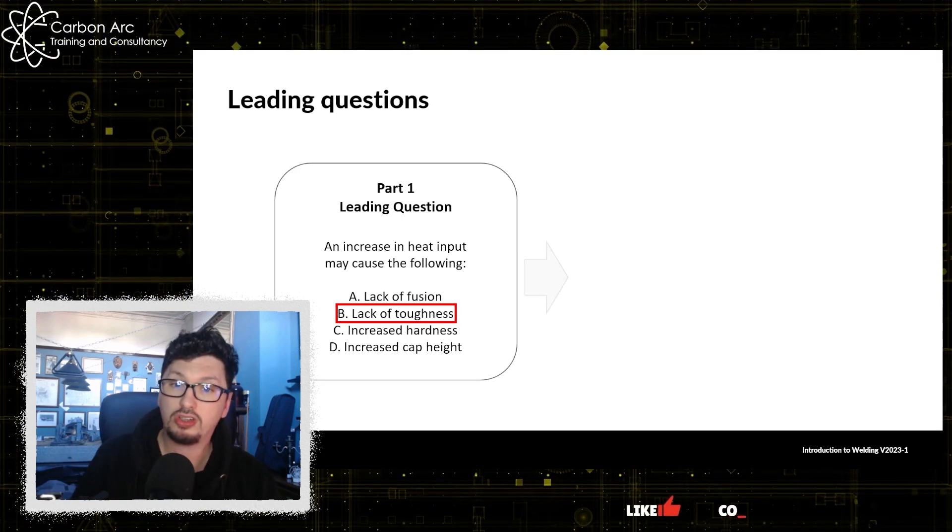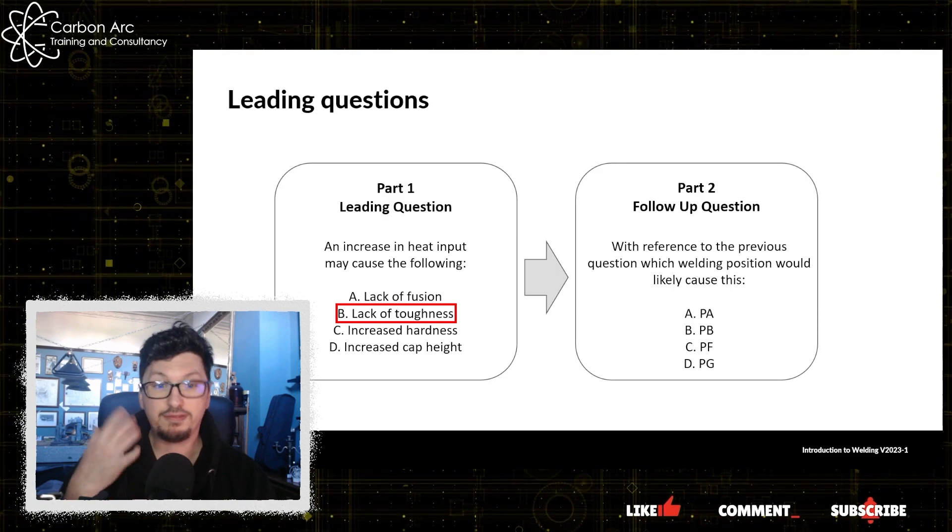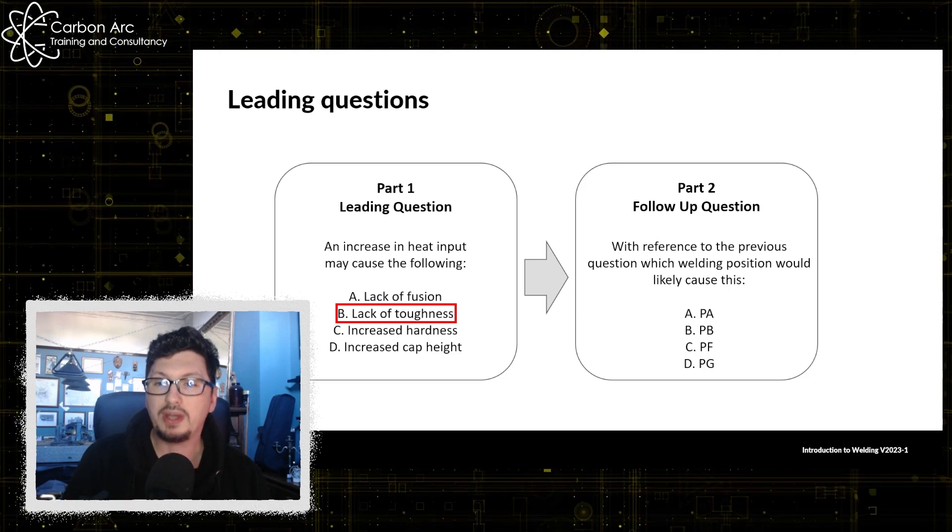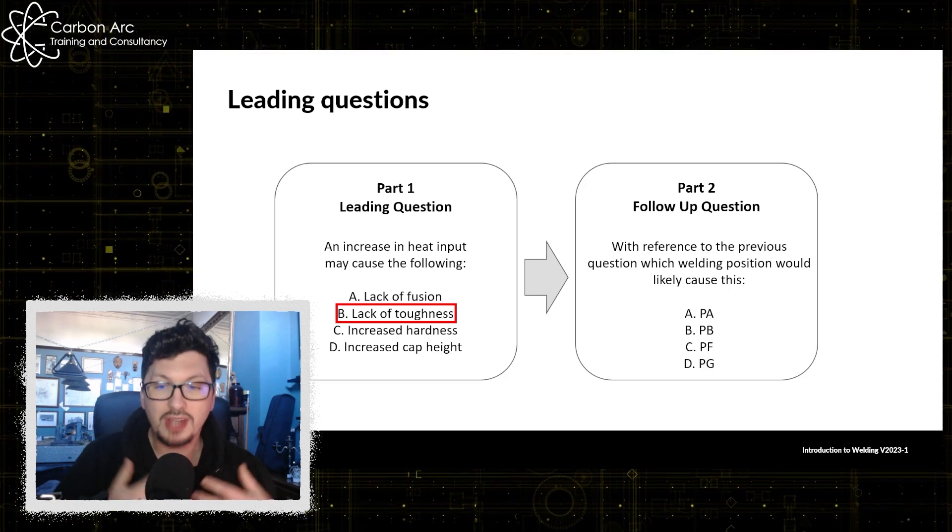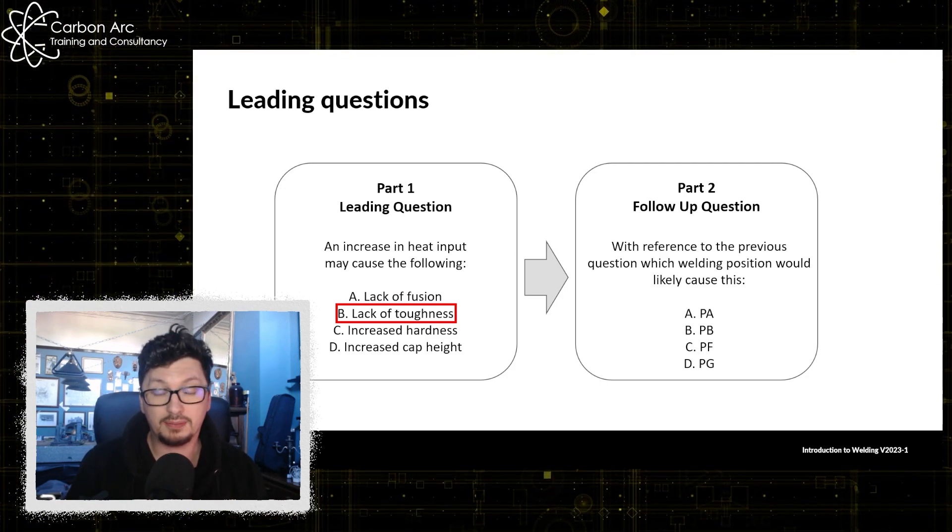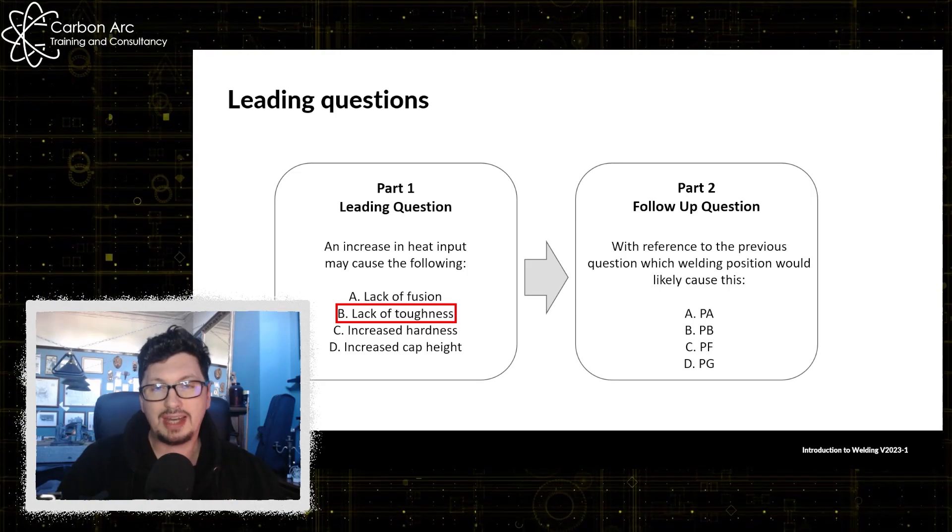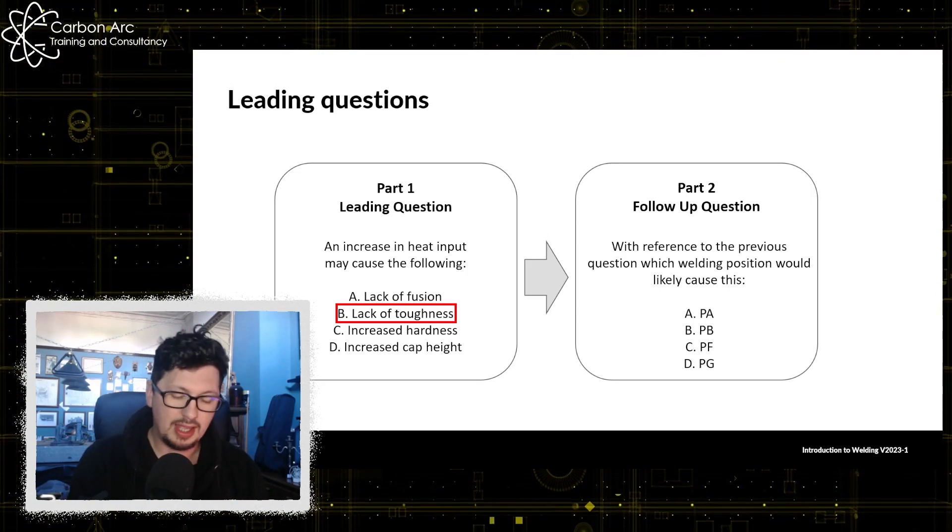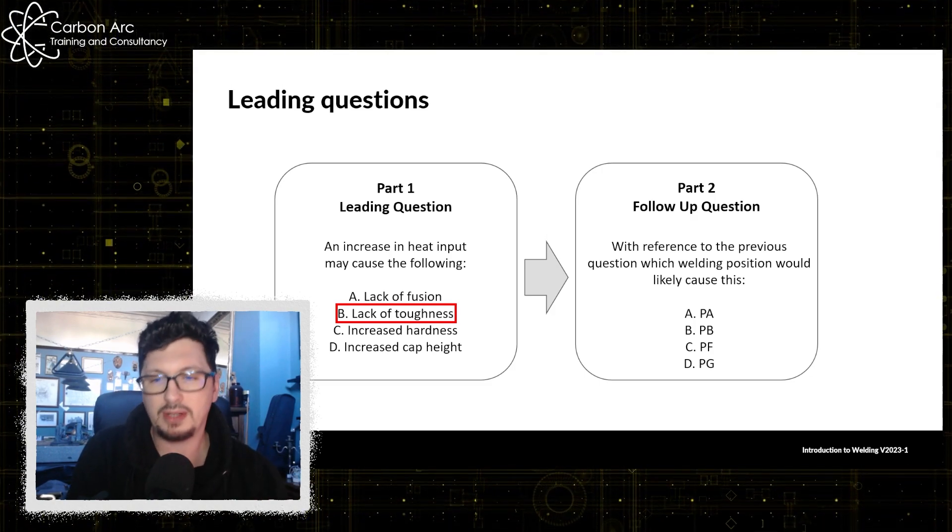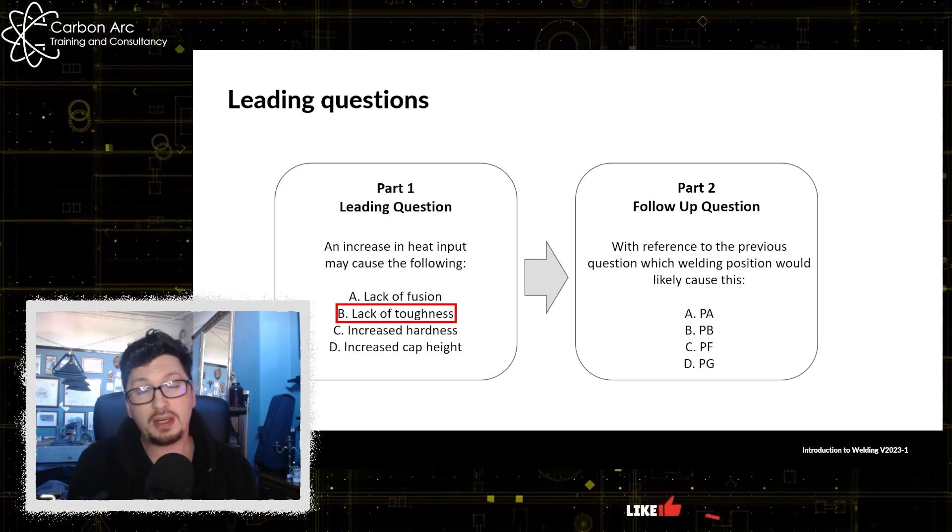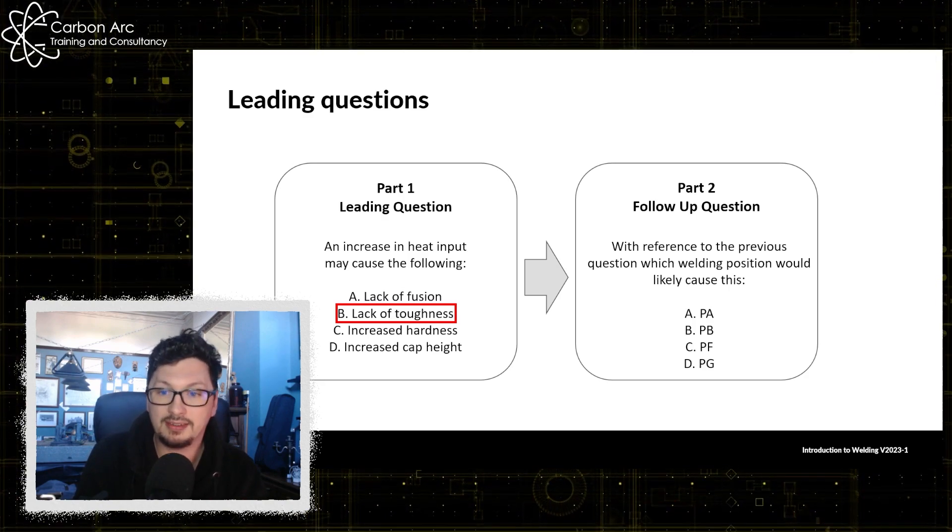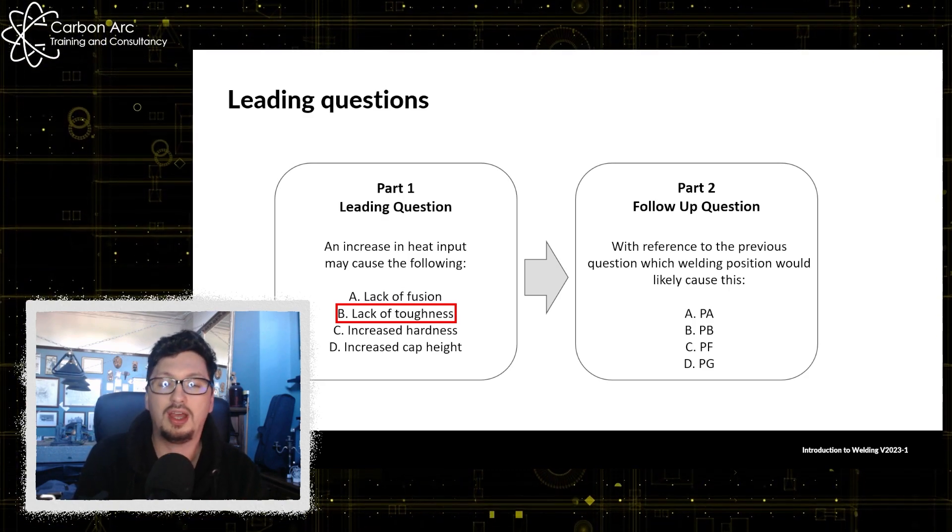And then in part two we've got a following question: with reference to the previous question, which welding process position would likely cause this? So with this we've got to look at which welding position would create the highest heat input potential just based on position. So what we can see here is probably a vertical up position out of these ones would cause the highest heat input value and that is PF.